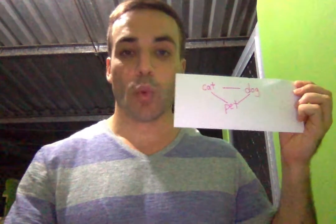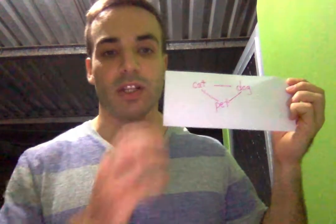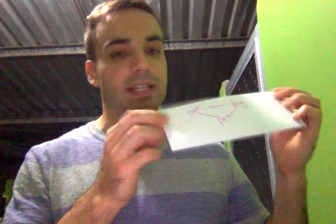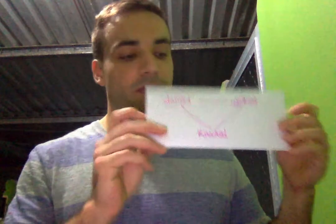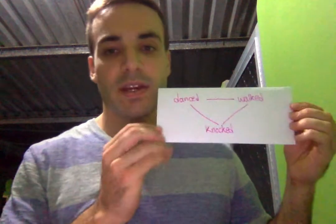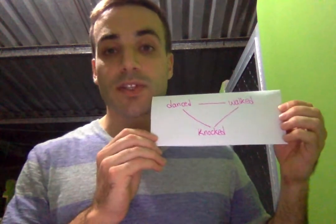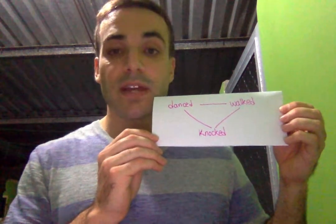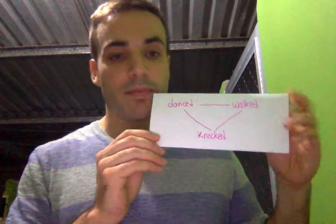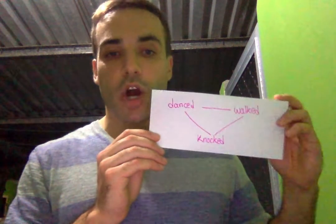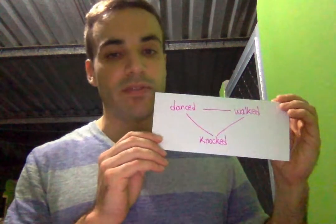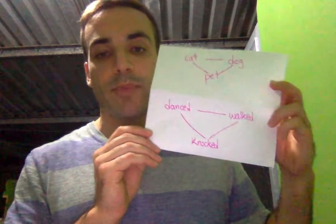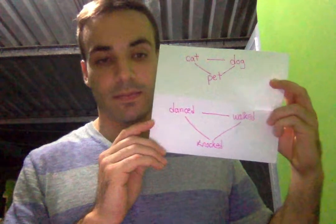Similar word parts are likewise connected — for instance, danced, walked, and knocked — because they all refer to past events and all share their regular past ending.